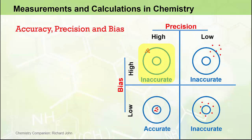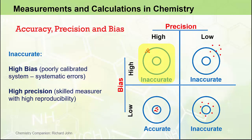The situation in the top left is considered inaccurate — it has high bias with high precision. This is an example of a skilled marksman where the grouping of shots is very close and reproducible, and therefore precise. However, we might presume the gun sights are a bit off and not well calibrated, causing the marksman to hit the target consistently high and to the left of the bullseye. Relating this back to measurement, we have a poorly calibrated measuring system causing systematic errors resulting in high bias. We still have a skilled measurer with high reproducibility, but this situation is still considered inaccurate due to the high bias.